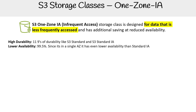Standard-IA has three nines because it's infrequently accessed, so it's going to have lower availability. This one is even lower because it only runs in a single zone — fewer zones means fewer availability. That's why they call them availability zones.